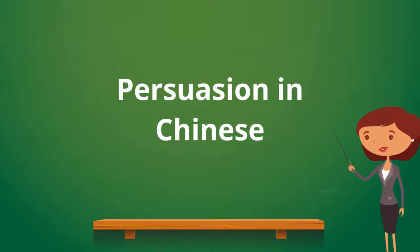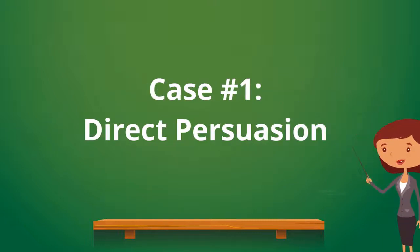In this video you will learn the strategies and expressions to make persuasions or to give advice in Chinese. There are two types of persuasions. The first one is direct persuasion — by directly persuading others, you just tell them what you want them to do. Direct persuasions are usually used between intimate parties such as friends and families.